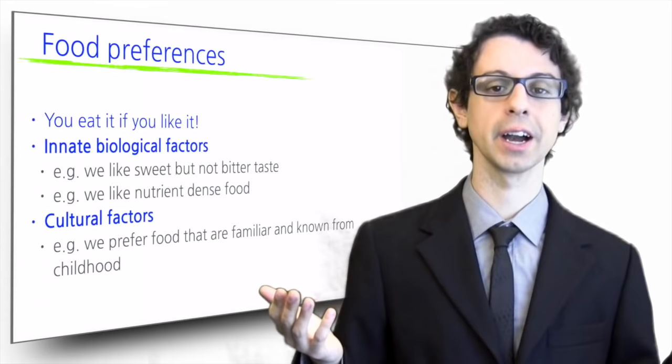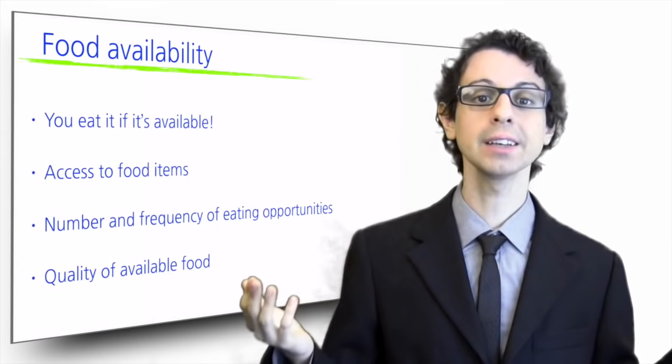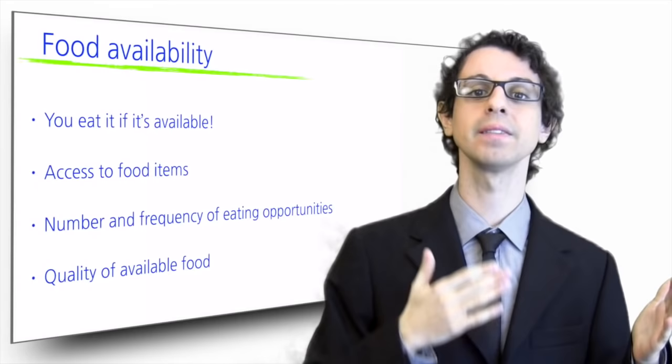But our food preferences are not the only determinant of our food choices. The most important one is food availability. For us to be able to eat it, it has to be there in the first place. If I have to have lunch at school cafeteria and there is no salad bar, I cannot have a salad, even if I'd like to.